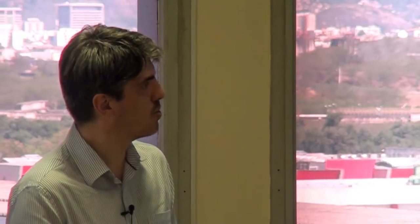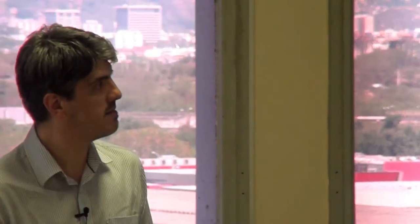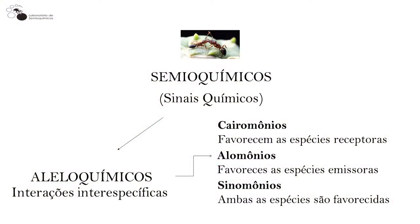Esses produtos de ocorrência natural responsáveis pelas interações entre espécies nós chamamos de semioquímicos — do grego 'semeio', que quer dizer sinais. Dentro dos semioquímicos temos dois grandes grupos: os aleloquímicos, responsáveis pelas interações interespecíficas, ou seja, entre espécies diferentes, subdivididos em três grupos. O primeiro são os cairomônios.